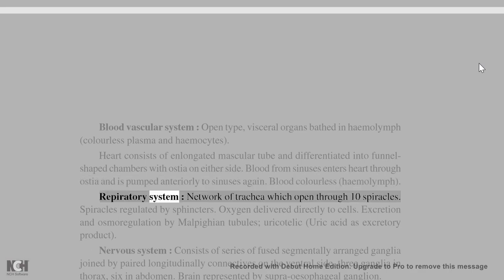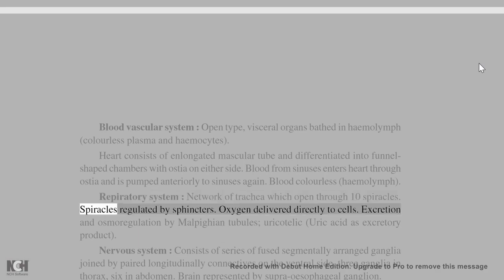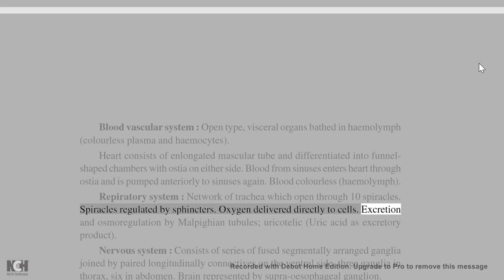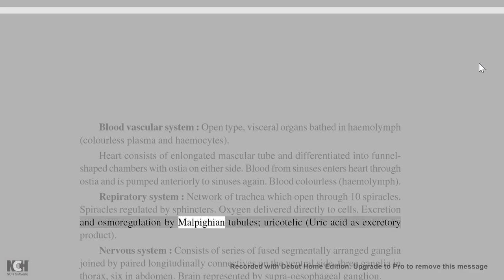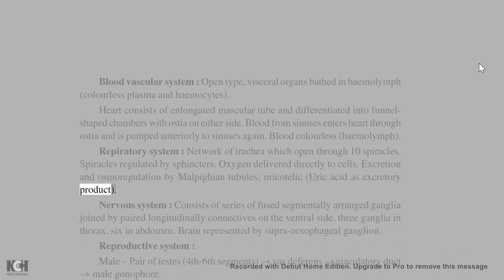The respiratory system consists of a network of trachea which open through ten spiracles regulated by sphincters. Oxygen is delivered directly to the cells. Excretion and osmoregulation are carried out by Malpighian tubules; the cockroach is uricotelic, excreting uric acid as its excretory product.